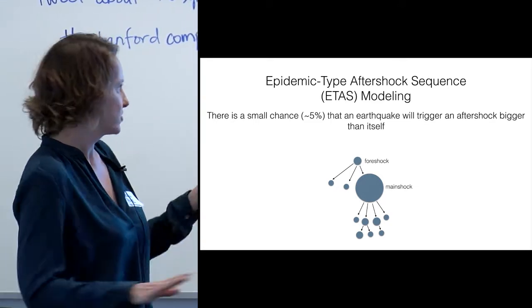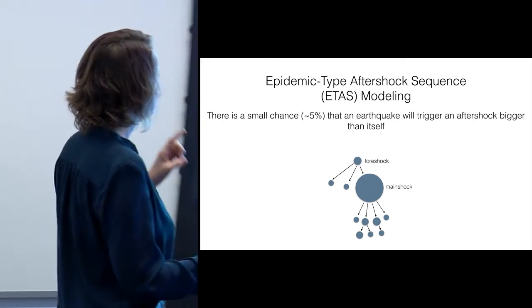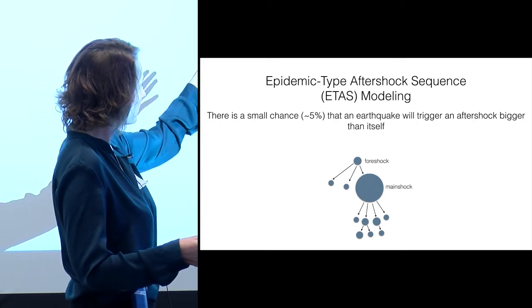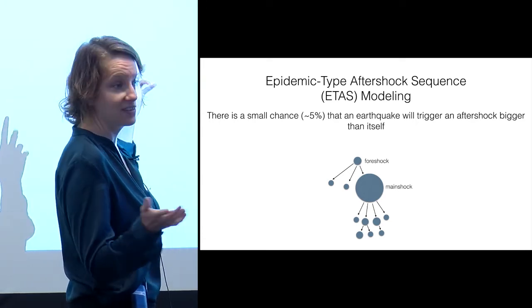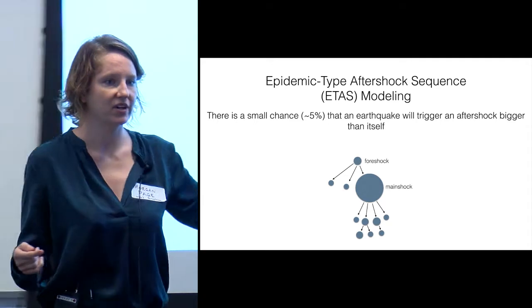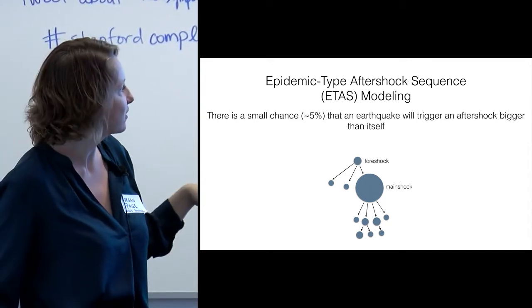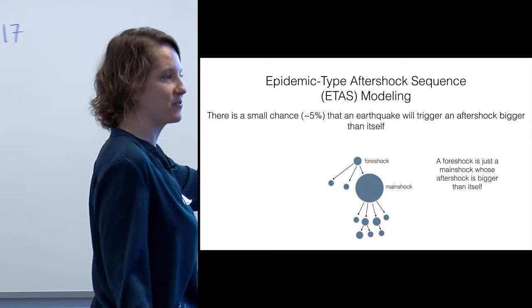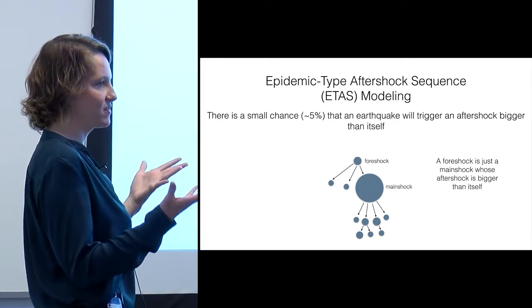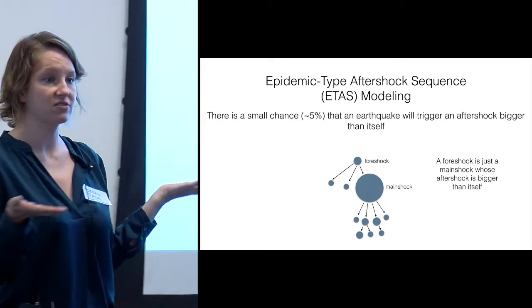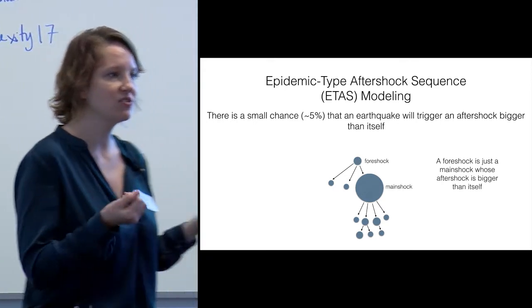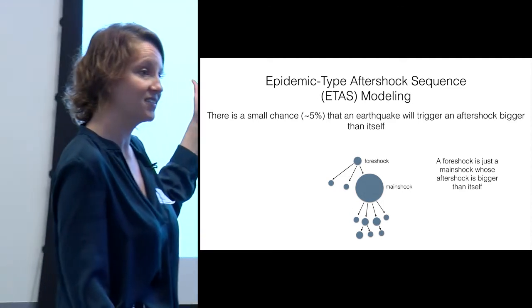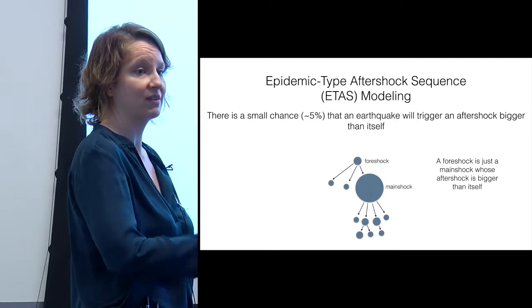So this is something people are always asking us when an earthquake happens. The press always comes to us, what's the chance it's going to trigger something even bigger? And we can always say, it's about five percent. And that's the chance it'll happen within a week or so, and then it decays as you get further out. So a given foreshock, this is showing an example of a small earthquake, this foreshock. It was in the five percent, and it happened to trigger something bigger, which after the fact we call that bigger earthquake a main shock. But before it happened, we didn't know that that small earthquake was a foreshock.